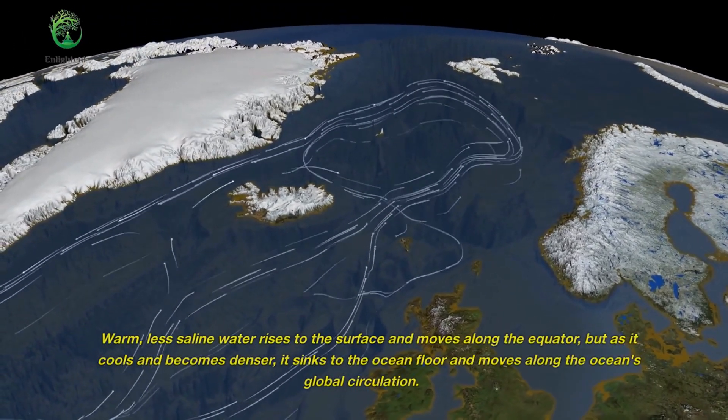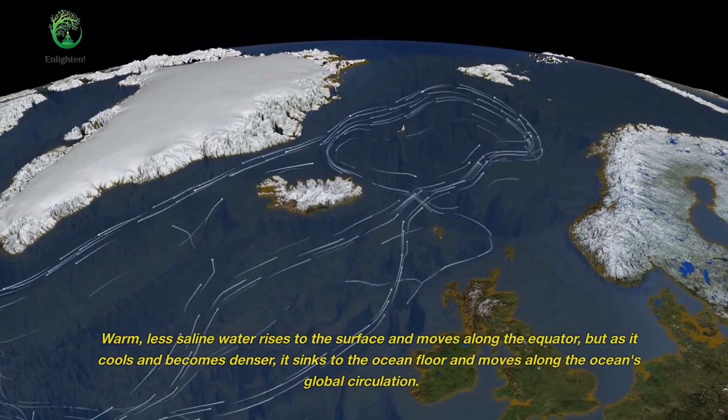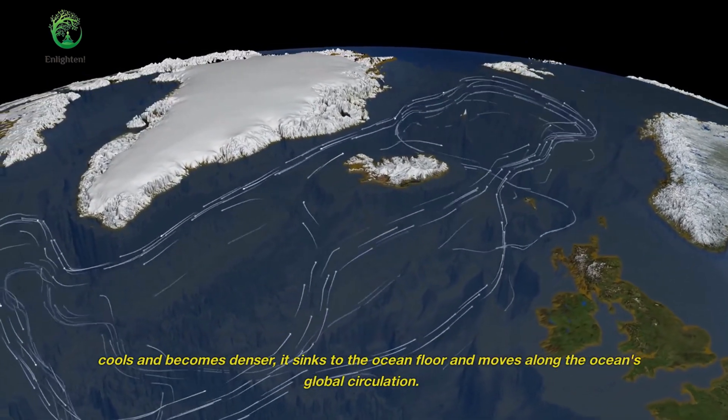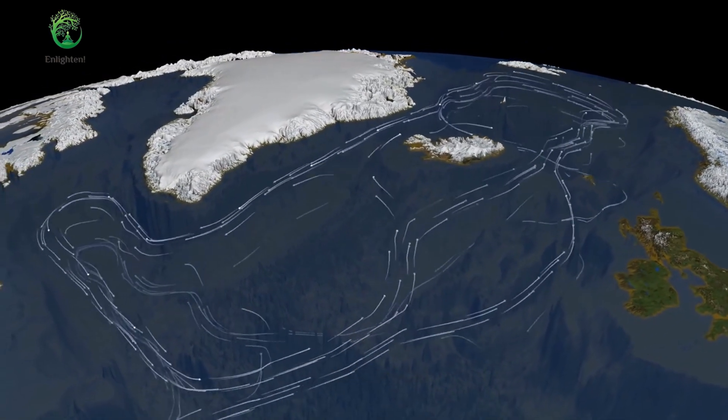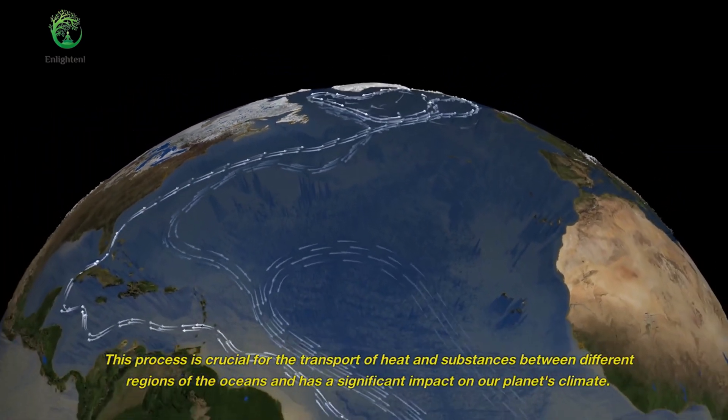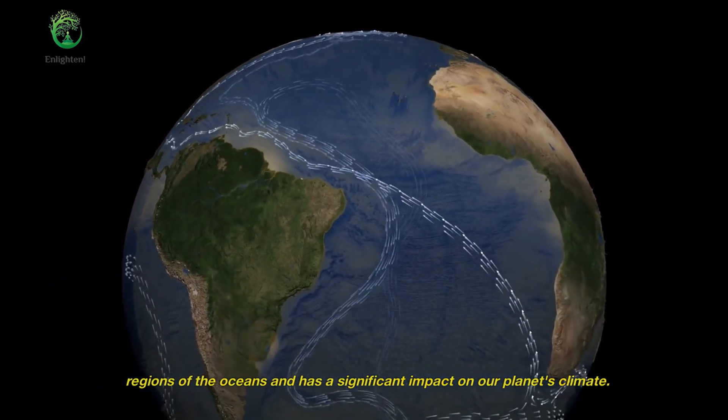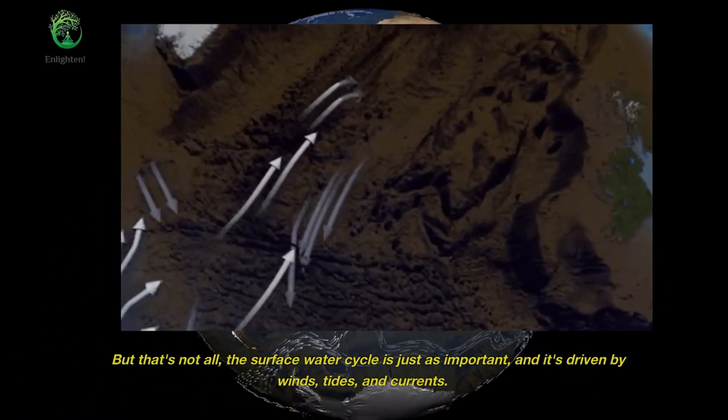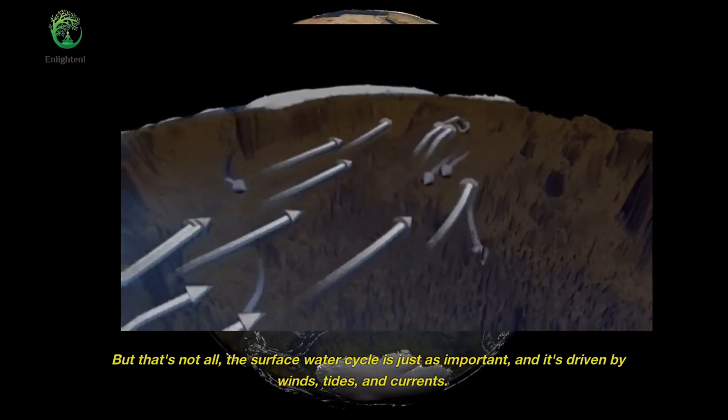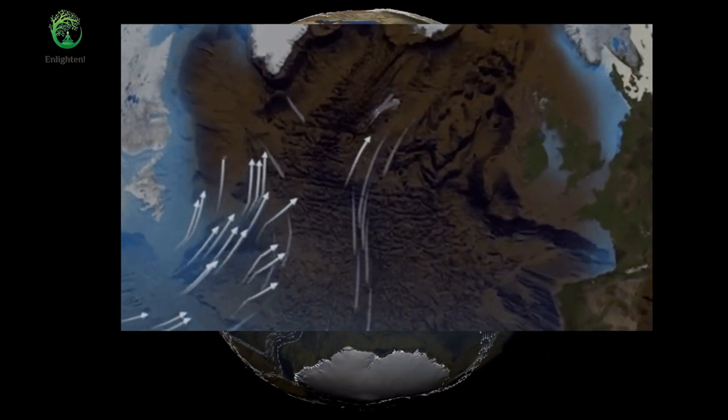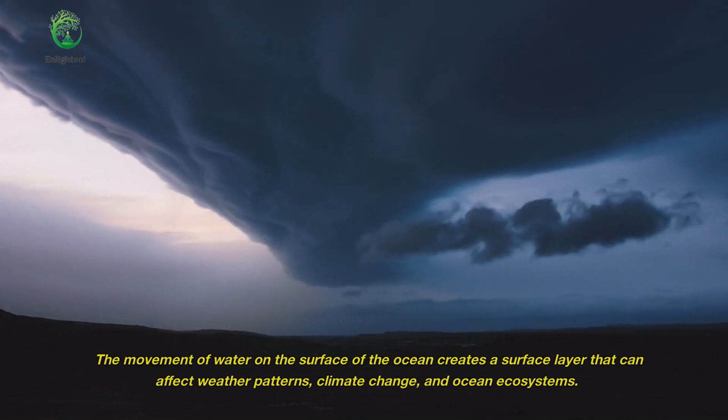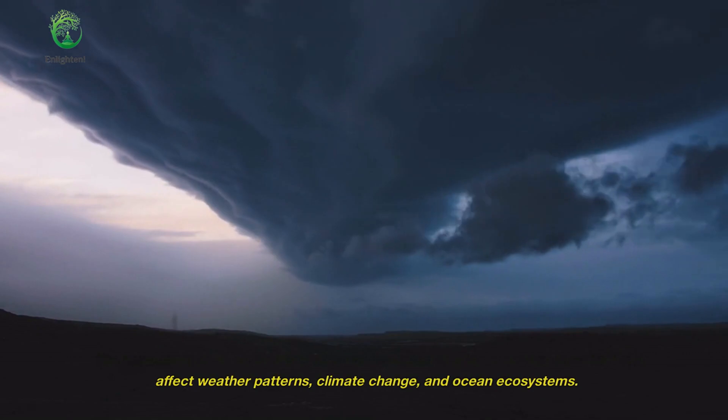Warm, less saline water rises to the surface and moves along the equator, but as it cools and becomes denser, it sinks to the ocean floor and moves along the ocean's global circulation. This process is crucial for the transport of heat and substances between different regions of the oceans and has a significant impact on our planet's climate. The surface water cycle is just as important, and it's driven by winds, tides, and currents. The movement of water on the surface of the ocean creates a surface layer that can affect weather patterns, climate change, and ocean ecosystems.